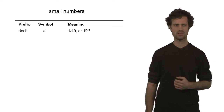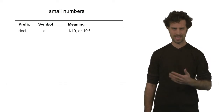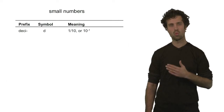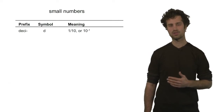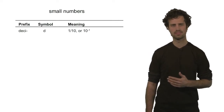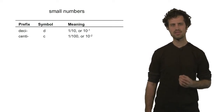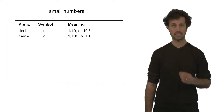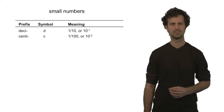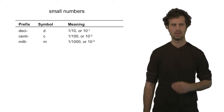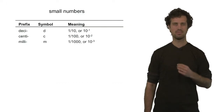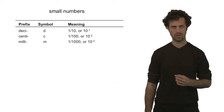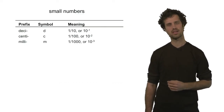The first prefix is deci, or d, which means one tenth, or ten to the minus one. Centi, or c, means one hundredth, or ten to the minus two. Milli, or m, means a thousandth, or ten to the minus three.